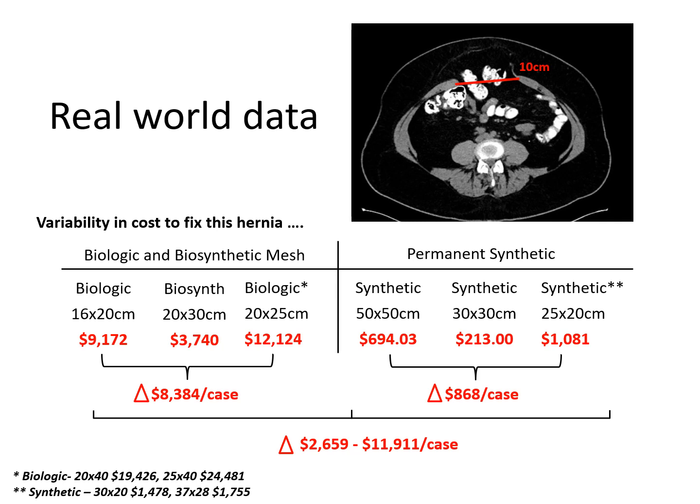If the selection is to use a biologic or biosynthetic mesh, you can see there's a variability of nearly $8,000 for the same piece of mesh in the same case. While patient outcomes are first and foremost, this would greatly impact the margin of the case and potentially add undue burden economically to both the institution and the patient. In the selection of permanent synthetic mesh, cost is approximately $868. When looking at permanent versus biologic, you're looking at a delta of anywhere from $2,500 to $12,000, and even across biologic and biosynthetic meshes, approximately $8,000.